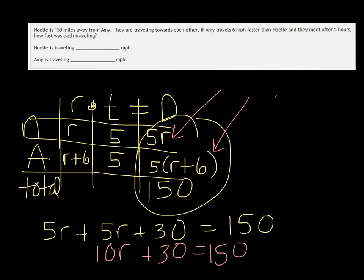Subtract that 30 over and we get 10R equals 120. And then divide by 10, so R is 12.